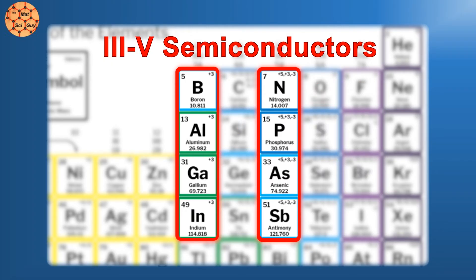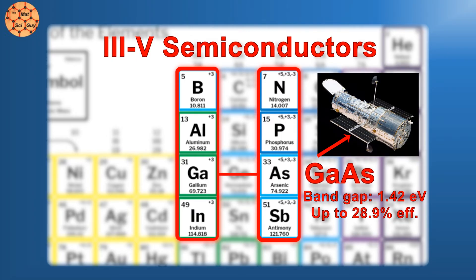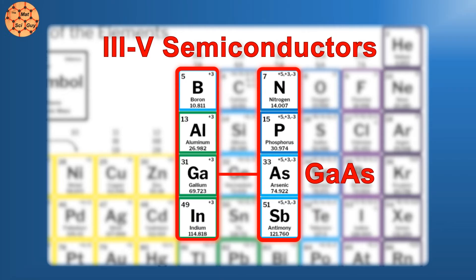For solar, gallium arsenide is an outstanding material, with a bandgap very close to the ideal value. It currently holds the world record for a single junction solar cell, and multi-junction derivatives are used in applications like space exploration, but it's just too expensive to be widely used here on Earth. Gallium is expensive by itself, and with the traditional process used to make high-quality gallium arsenide wafers, it's prohibitively expensive, around 1000 times the price of silicon.